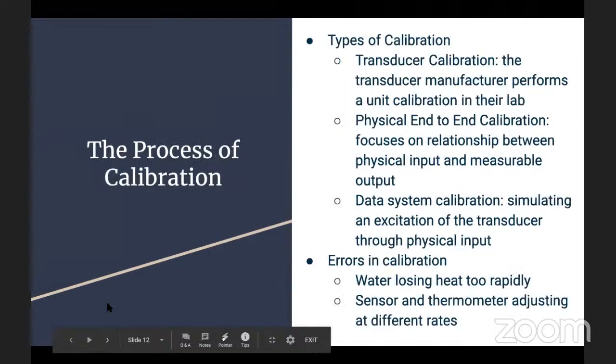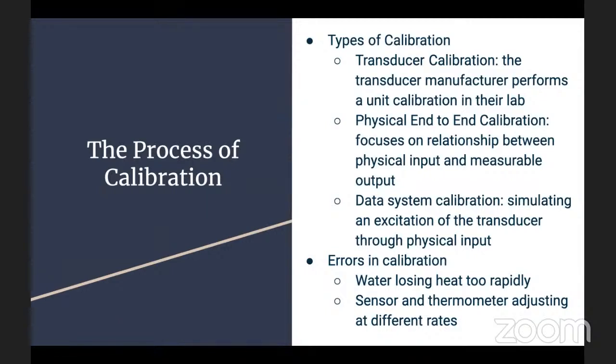You also need to know about the process of calibration. There are a couple types of calibration. One type is transducer calibration - the transducer manufacturer performs a unit calibration in their lab. You can also do physical end-to-end calibration. There's also end-to-end calibration that focuses on the relationship between physical input and measurable output. There's also data system calibration, which is simulating an excitation of a transducer through physical input.